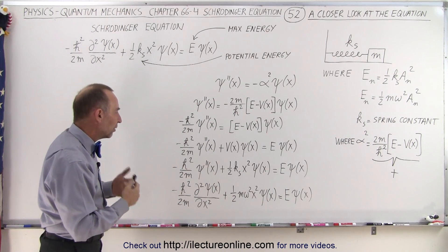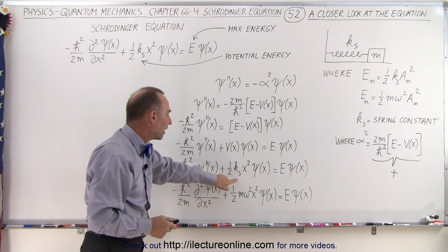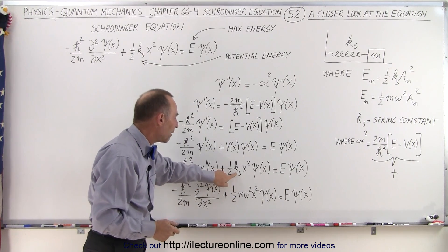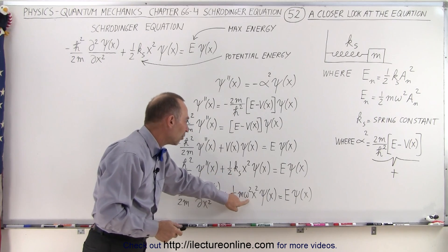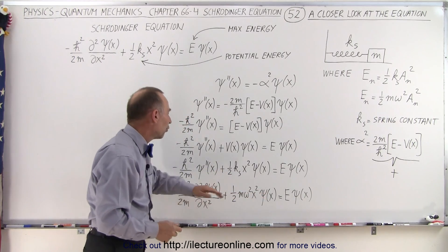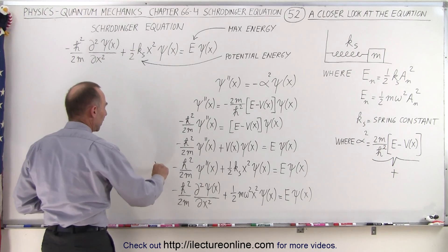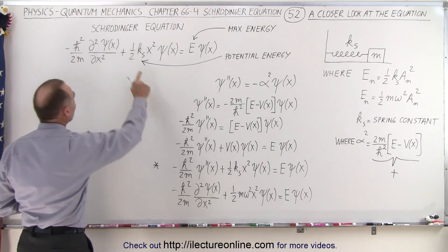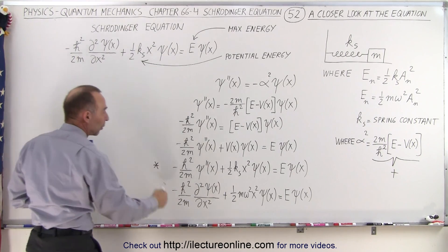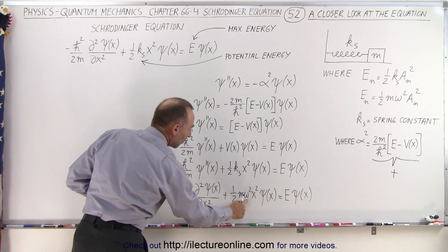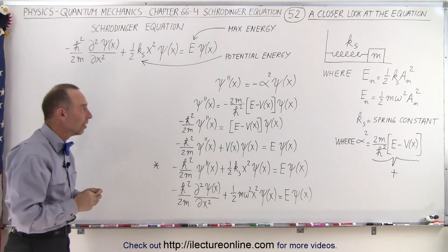Now all we can do at this point is take the one-half k x squared and replace k by m times omega squared to write it in this format. So you can see that this format right here is exactly the same as what we have up here, or if you want to replace k sub s by m omega squared, you can have the equation look like this.